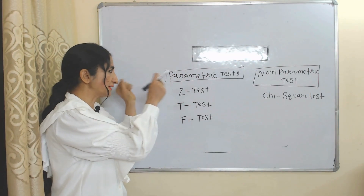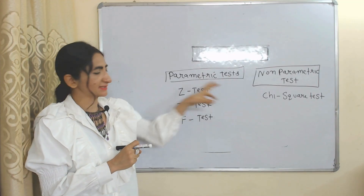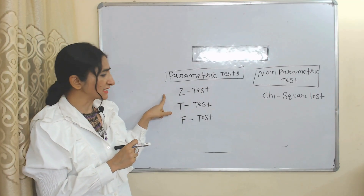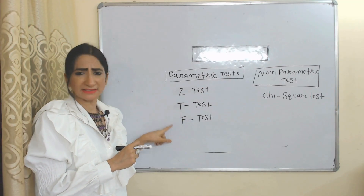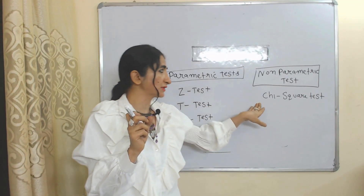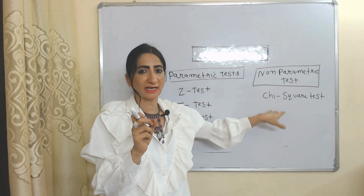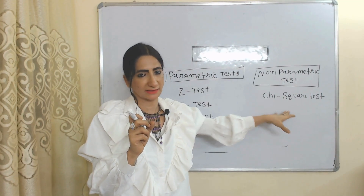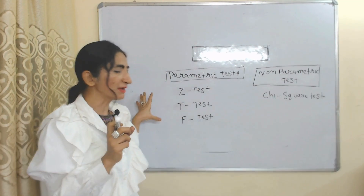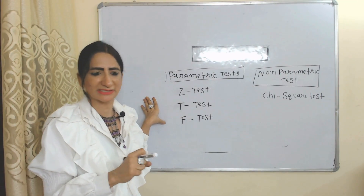Tests of hypothesis are mainly divided into two parts: parametric tests and non-parametric tests. Parametric tests include the Z test, T test, and F test. One important type of non-parametric test is the chi-square test. We will discuss each test one by one.